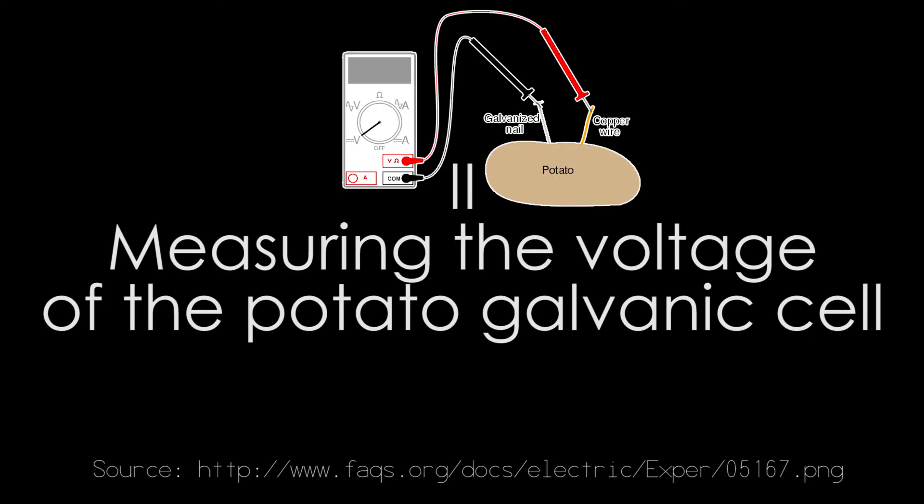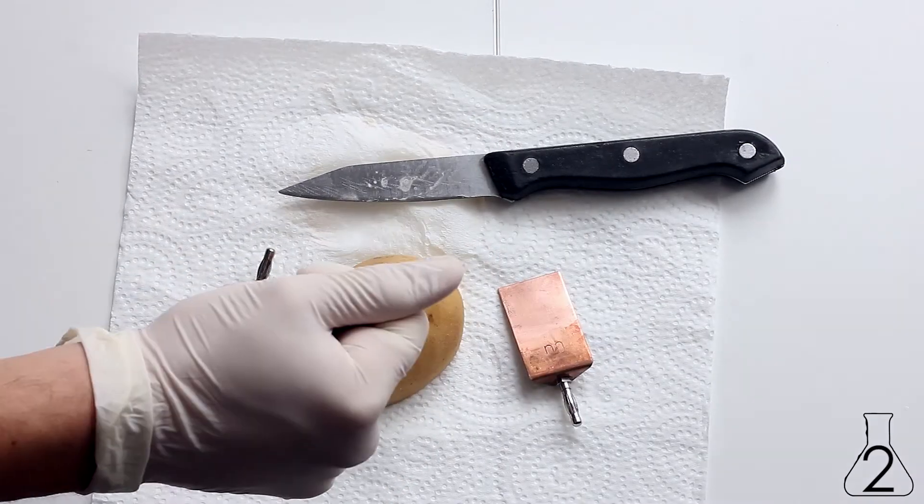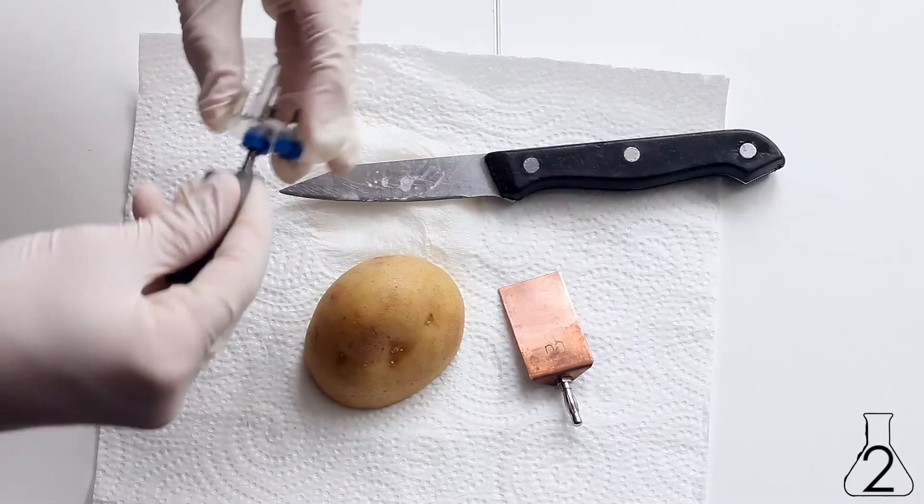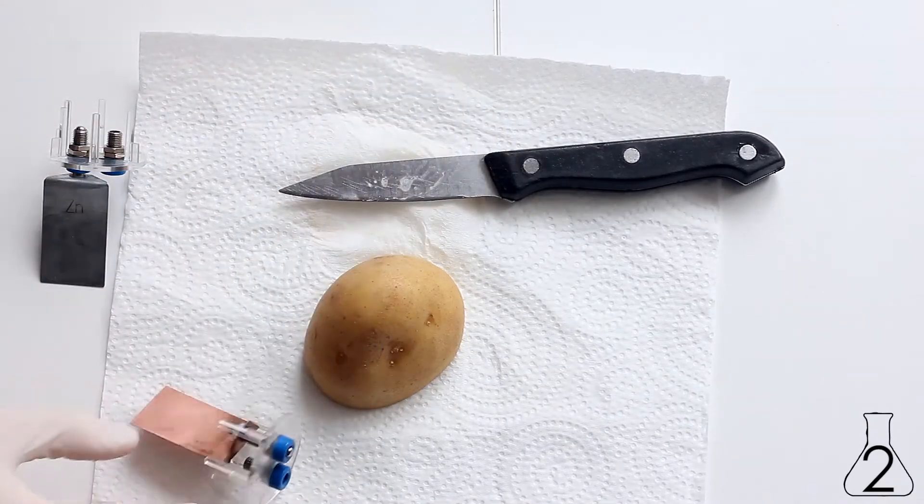Now we have to measure the voltage that this potato can produce. So we take the other half of the potato and stick a zinc sheet and a copper sheet to it that are connected to a power measuring device.